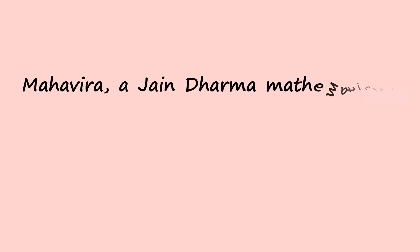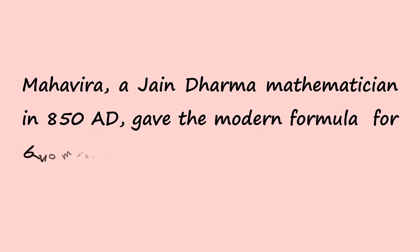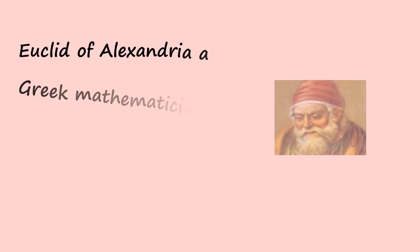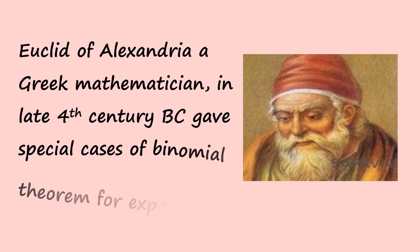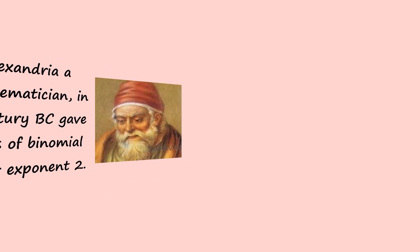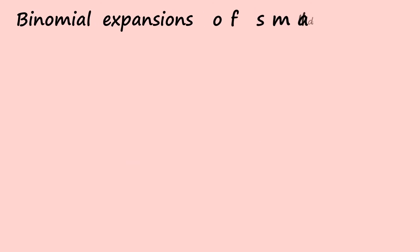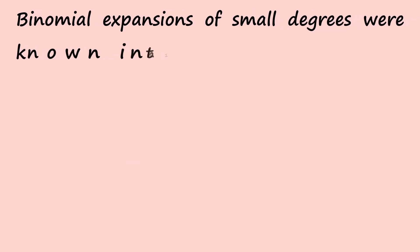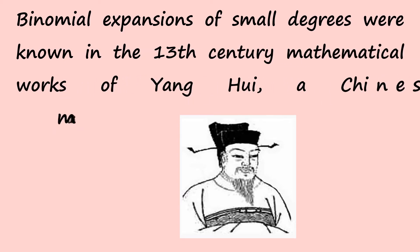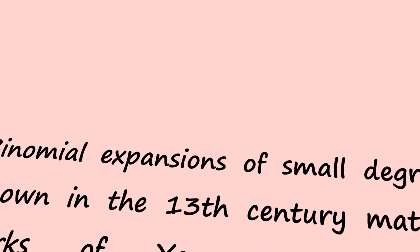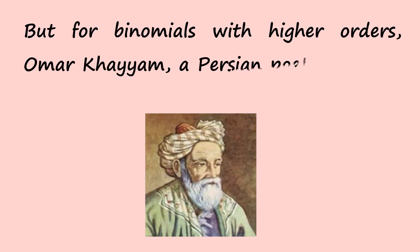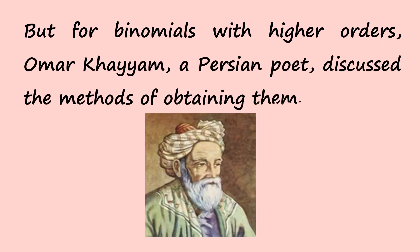Mahavira, a Jain dharma mathematician in 850 AD, gave the modern formula for binomial coefficients. Euclid of Alexandria in the late 4th century BC gave special cases of the binomial theorem for exponent 2. Binomial expansions of small degrees were known in the 13th century mathematical works of Yang Hui, a Chinese mathematician. For binomials with higher powers, Omar Khayyam, a Persian poet, discussed the methods of obtaining them.